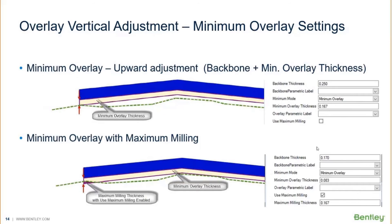Now with the minimum overlay in combination with the backbone thickness and the overlay thickness, it would find the critical point. It would add the minimum overlay thickness and also add in the backbone thickness that you specified in the dialog. So you're going to get backbone plus minimum overlay thickness for the adjusted value — that would give you a much higher vertical.